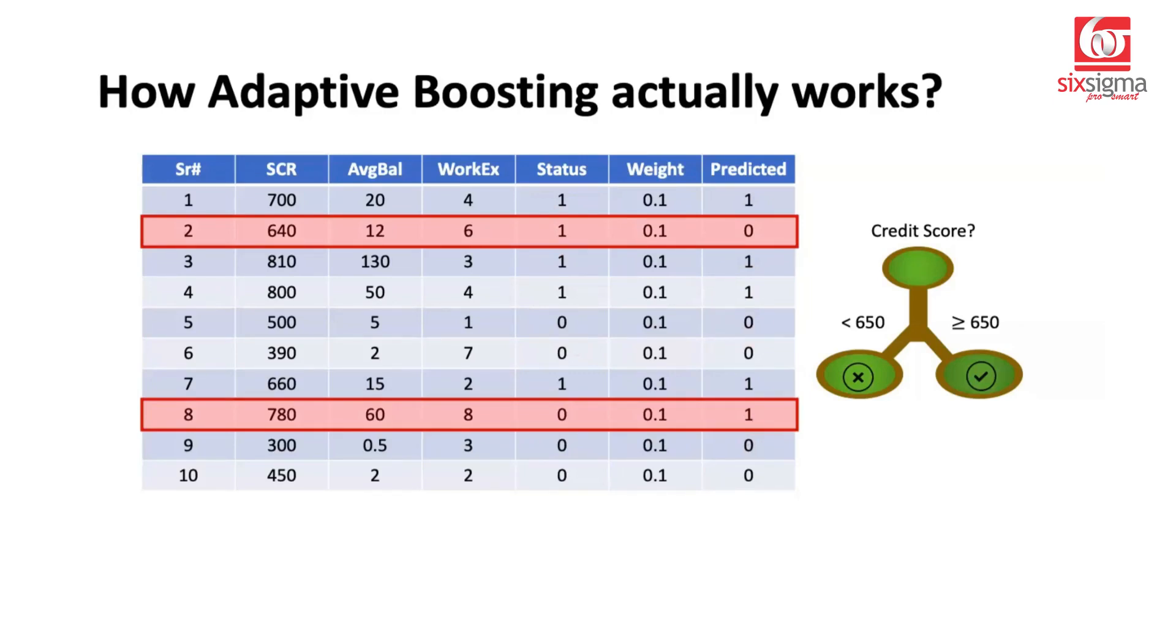Now these are the misclassified records and we want to assign weights to them. But how do we derive the weights? So our error rate is 0.2, which is 2 out of 10 predictions. The question is how do we decide the weightage for these records? And in adaptive boosting, not only are the records weighted, even the trees are weighted. So using the weights that we derive for a tree, we will derive the weight assigned to a record.